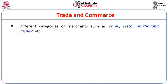Regarding trade and commerce, different categories of merchants are found: Vanij, Sethi, Sarthavaha, Vasniko — that is, itinerant merchant, caravan leader who took a good number of caravans with many articles of trade from one place to another. Vanij is a blanket term that encapsulates not only the peddler or hawker but also a big merchant. Sethi refers to a financier, a big merchant. All these were particularly associated with business and trading activities.